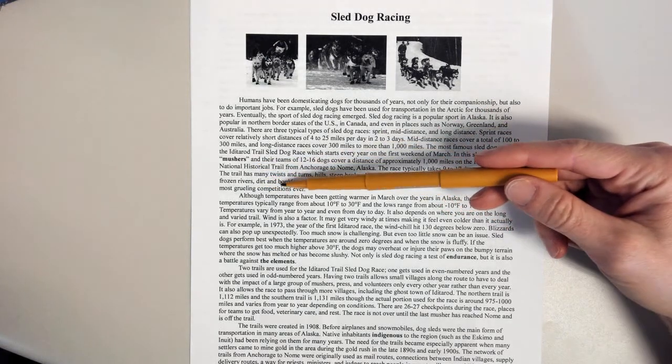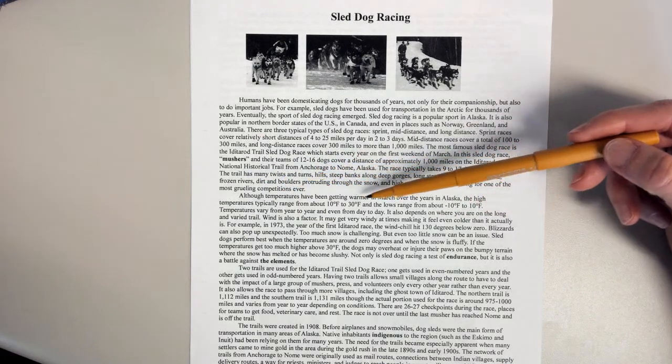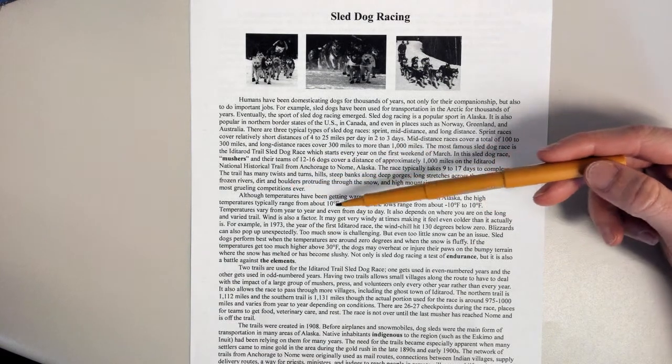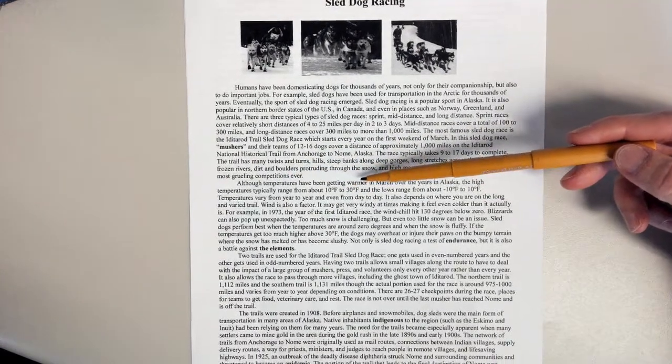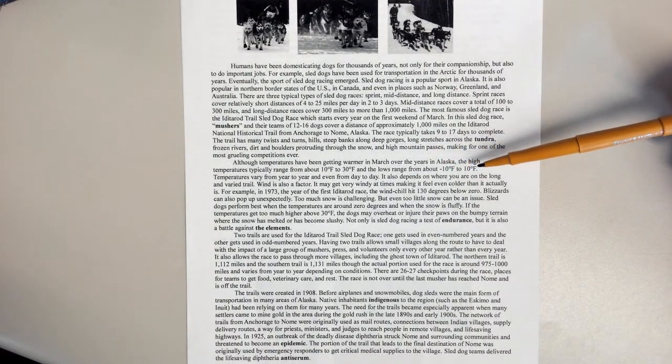Although temperatures have been getting warmer in March over the years in Alaska, the high temperatures typically range from about 10 degrees Fahrenheit to 30 degrees Fahrenheit, and the lows range from about negative 10 degrees Fahrenheit to 10 degrees Fahrenheit.